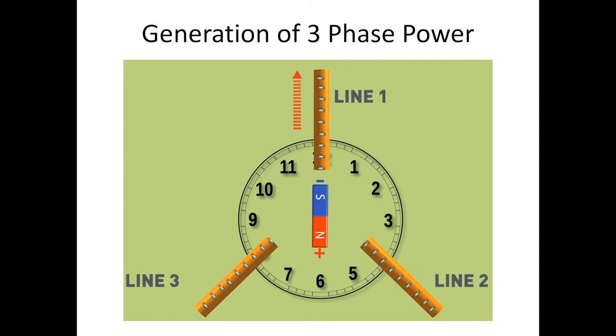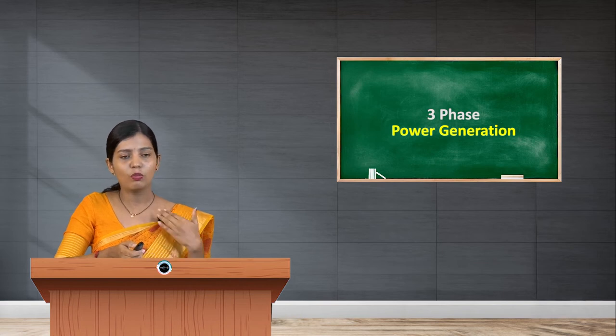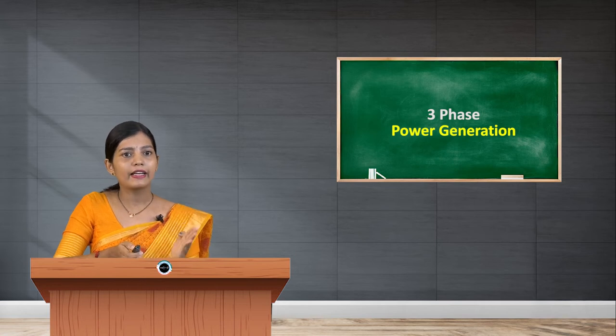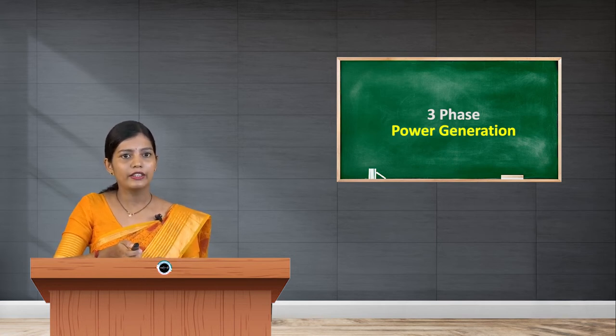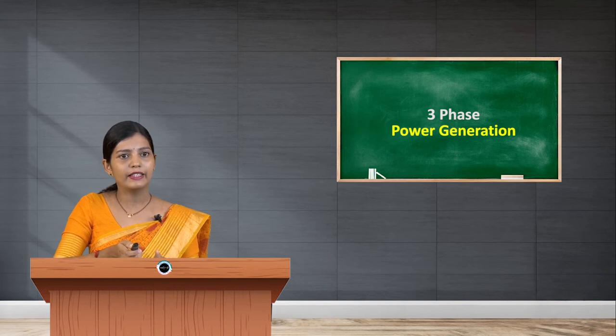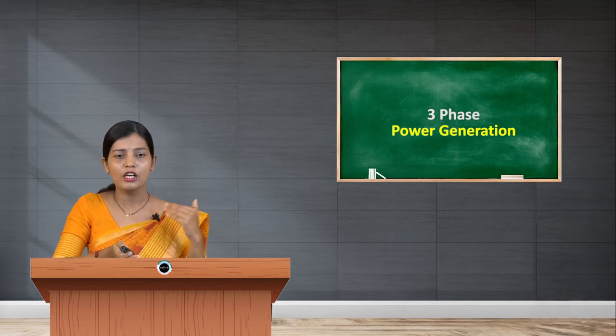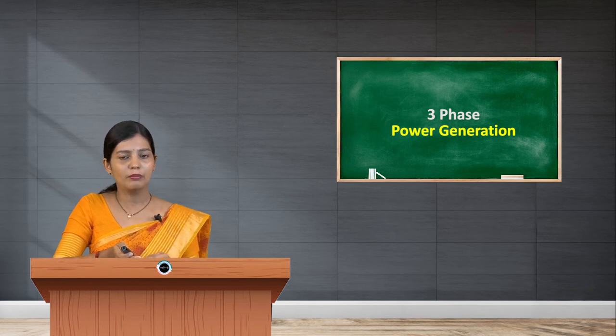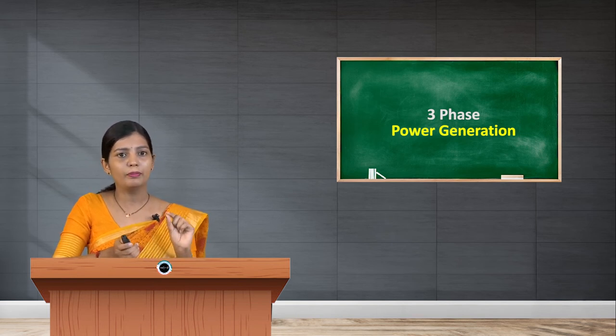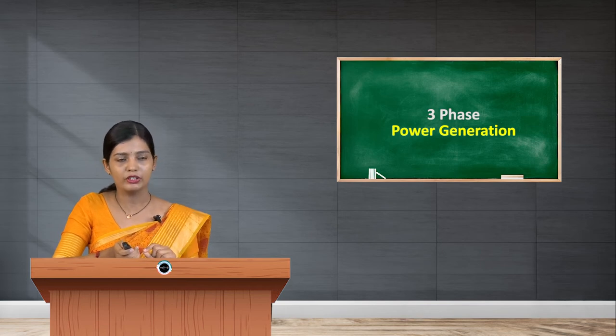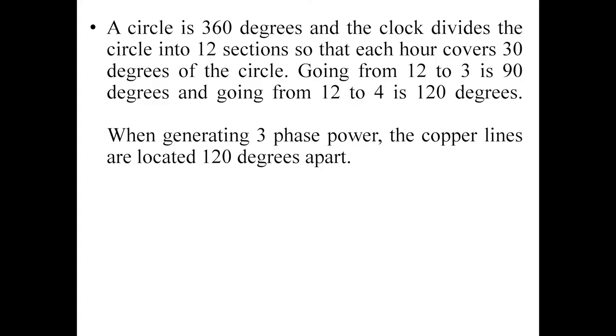That exactly is shown in this diagram—it represents a clock. At 12 o'clock you have Line 1, at 4 o'clock we have Line 2, and at 8 o'clock Line 3. Why are we using a clock? Because the clock exactly divides the degrees—12 to 3 is 90 degrees and 12 to 4 is 120 degrees. Initially we noted that in a three-phase system, all three lines should be placed 120 degrees apart from each other.